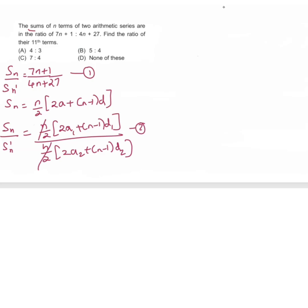Comparing 1 and 2 we can write this as 2a1 plus n minus 1 into d1 divided by 2a2 plus n minus 1 into d2 equals 7n plus 1 divided by 4n plus 27. Call this as equation 2.